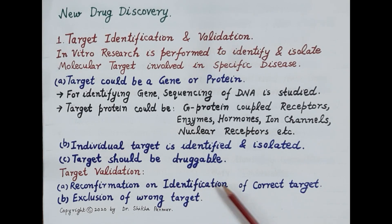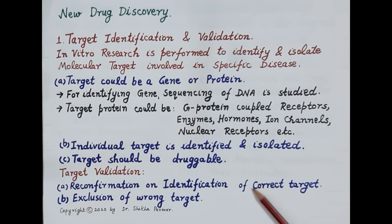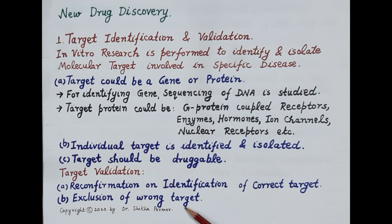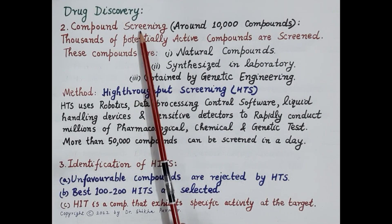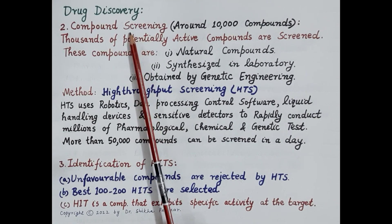Target identification is followed by target validation. Target validation reconfirms that the target identified and isolated is the correct target, that it is involved in the generation of the specific disease, and that its functioning could be regulated by a new drug to obtain the therapeutic effect. A second purpose of target validation is to ensure that all wrong targets are eliminated.